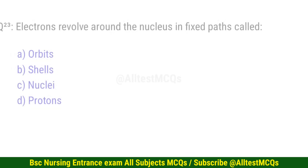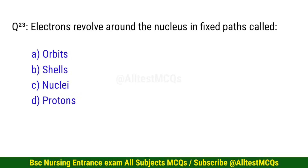Question number 23. Electrons revolve around the nucleus in fixed paths called? The right option is A: Orbits.